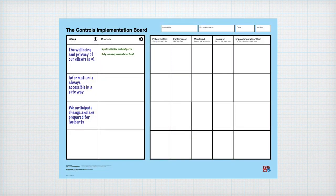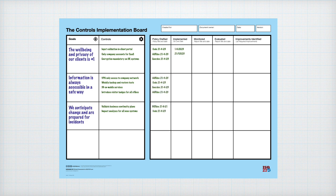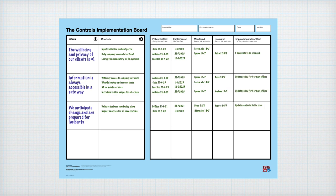Team leaders and management can use the Controls Implementation Board to keep track of the implementation of each control as they move towards mature Information Security Management.